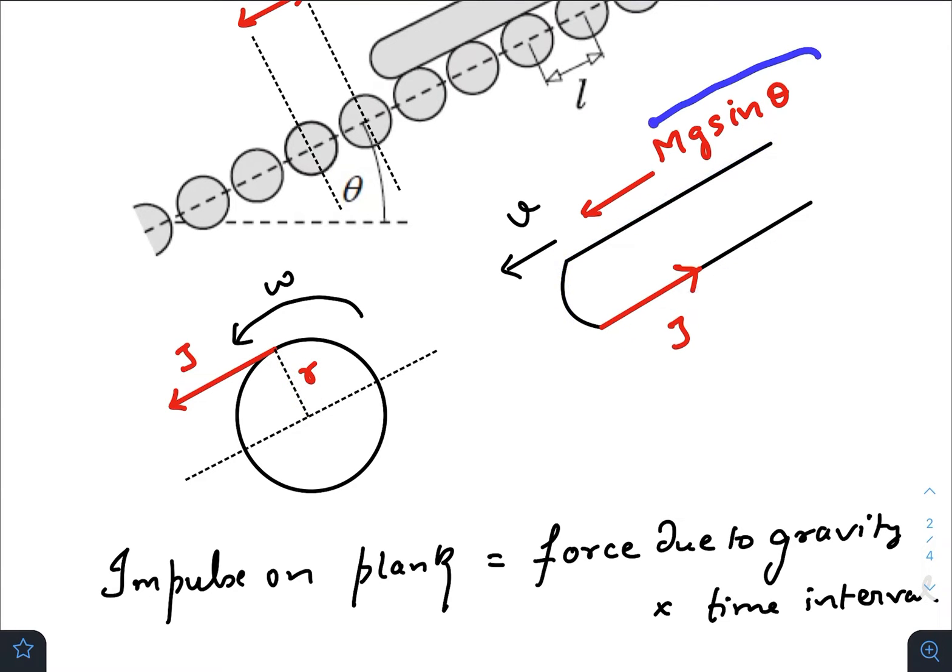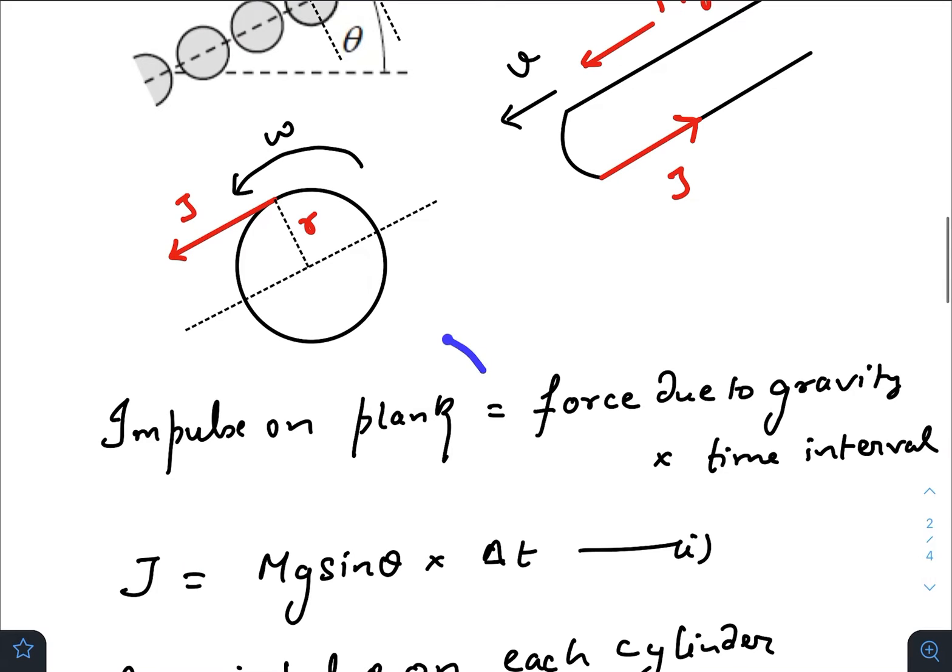This is the plank where gravity is acting along the inclination. An impulsive force is also acting on the plank, trying to maintain its speed. Now the impulse on the plank should be equal to the force due to gravity times the time interval.